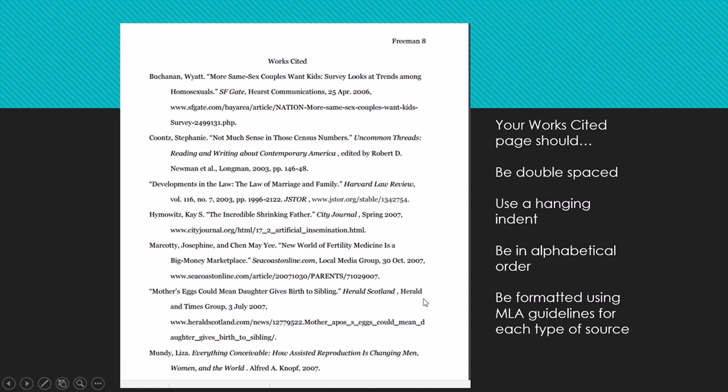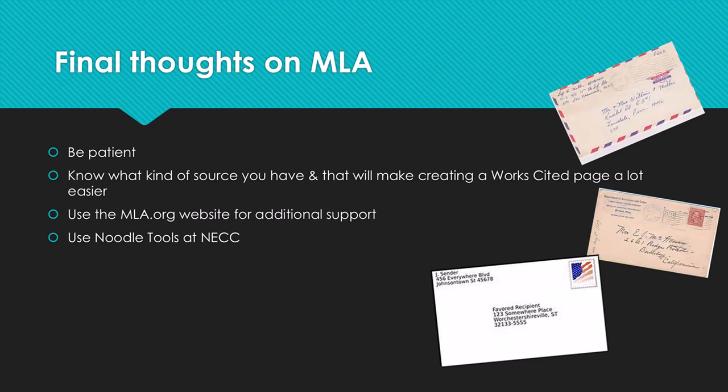Overall, this workshop showed you what MLA citations look like inside a paper and on a works cited page. The first tip is to be patient, just like when you were learning to write letters as a child. The second is to know what kind of source you have — whether it's an online article, website, blog, or film — because different source types have slightly different conventions for the works cited page. Once you know your source type, go to the MLA.org website to see what you need to do.